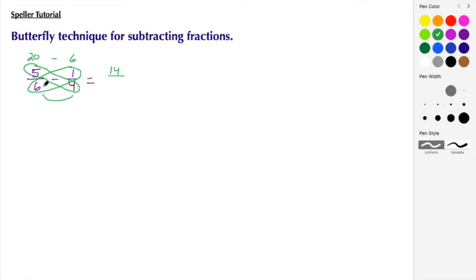Then I'm going to multiply my denominators, 6 times 4 to give me 24. Here we see with the cross multiplying and then multiplying the denominators, it looks like it could be a butterfly.